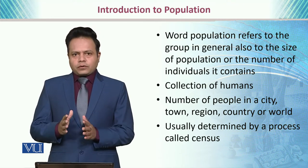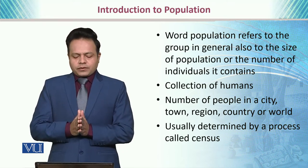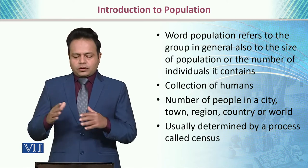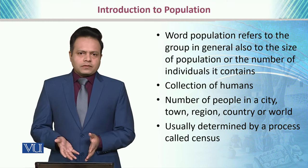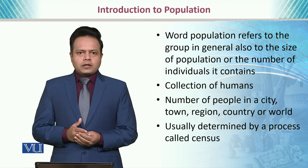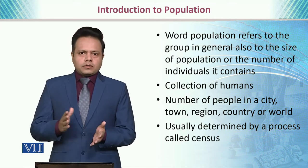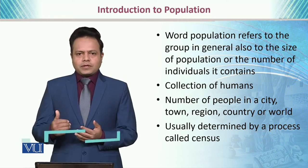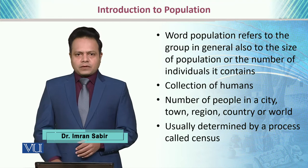If we talk about the population of a particular geographic area, it means the number of people in a city, town, region, country, or around the globe. It is usually determined by the process called census, and normally these census statistics are collected on a decade basis. For each decade, we have to produce census by physically counting the number of inhabitants in any specific geographic area.